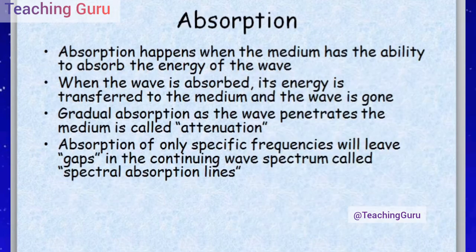Next is absorption. Absorption happens when the medium has the ability to absorb the energy of the wave. When the wave is absorbed, its energy is transferred to the medium and the wave is gone. The gradual absorption as the wave penetrates a medium is called attenuation. The absorption of only specific frequencies will leave gaps in the continuous wave spectrum, called spectral absorption lines — this is very important for competitive exams.